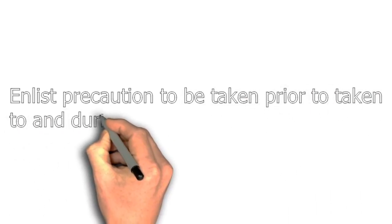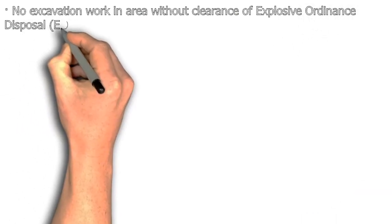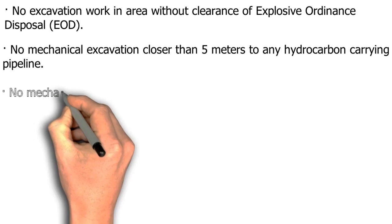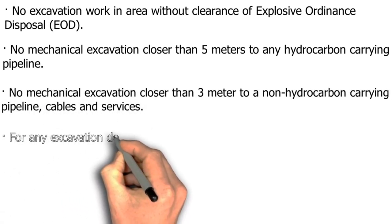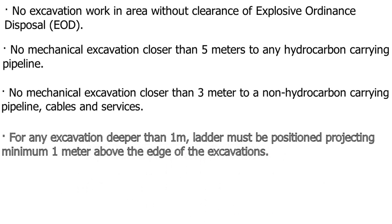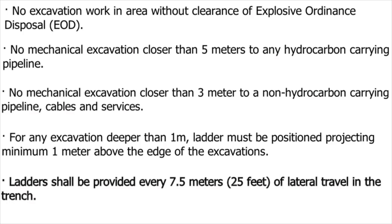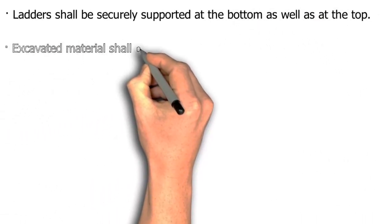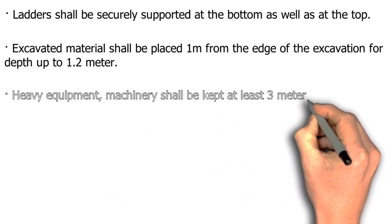Precautions to be taken prior to and during excavation work: No excavation in any area without clearance from explosive ordnance disposal. No mechanical excavation closer than 5 meters to any hydrocarbon-carrying pipeline. No mechanical excavation closer than 3 meters to a non-hydrocarbon-carrying pipeline, cables and services. For any excavation deeper than 1 meter, a ladder must be positioned projecting a minimum of 1 meter above the edge of the excavation. Ladders shall be provided every 7.5 meters of lateral travel in the trench. Ladders shall be securely supported at the bottom as well as at the top. Excavated material shall be placed 1 meter from the edge of the excavation for depths up to 1.2 meters. Heavy equipment and machinery shall be kept at least 3 meters away from the edge.